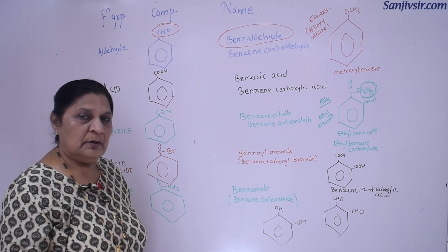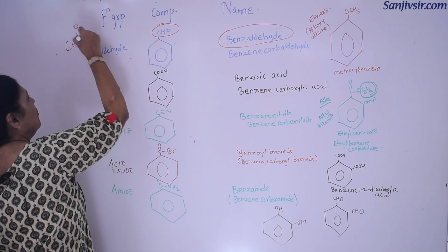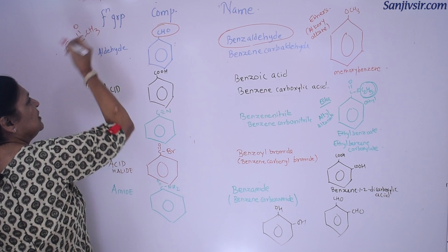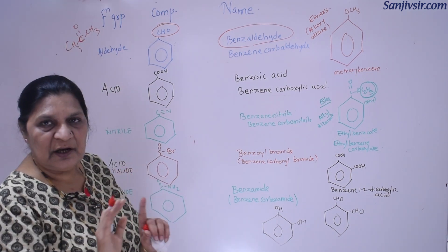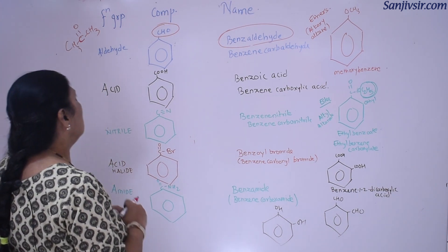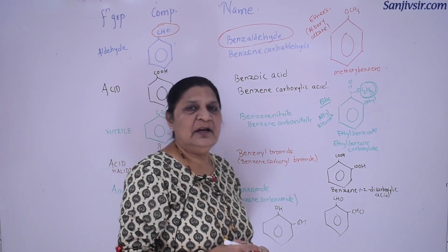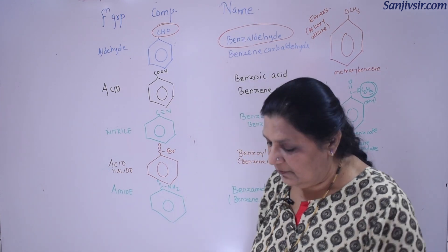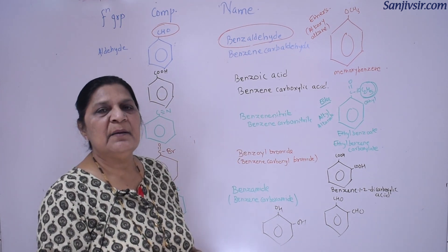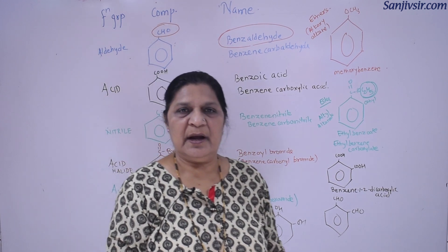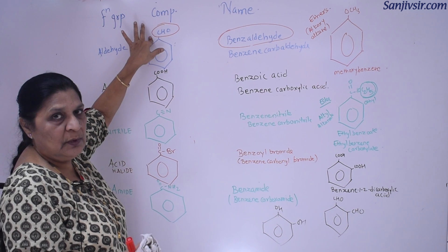Ketone, however, is not a terminal group — it appears at the second or third carbon, never at the terminal position. For terminal groups, the IUPAC 1993 convention says that when writing 'benzene', we count six carbon atoms, and we do not count the carbon atom of the terminal functional group.